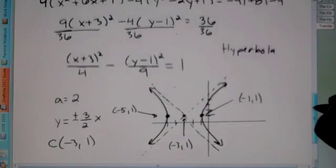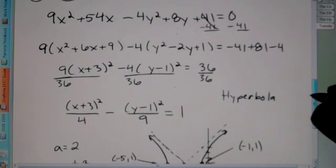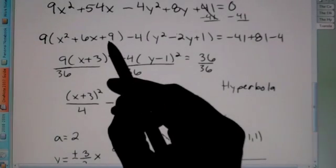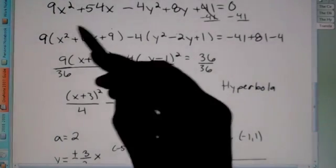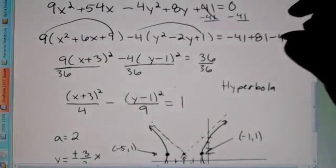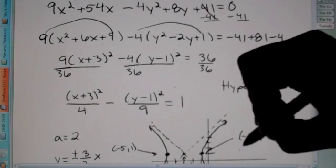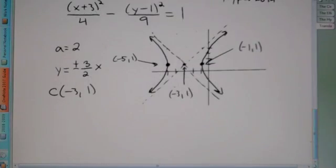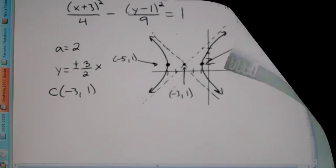So good luck with that. I know this one was a lot of problems because we had to complete the square. Don't forget, again, we didn't just add 9. We added 81 to both sides. Here, we added negative 4 to both sides. All right. Well, good luck with that. And again, ask questions at school if you need help. All right. Bye.